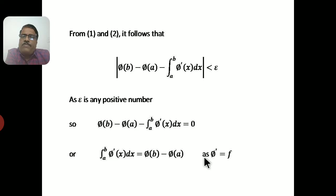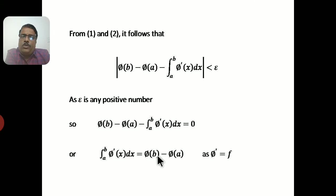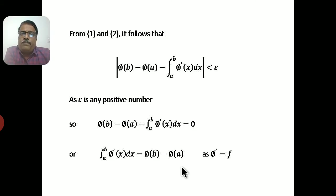Since φ is a primitive, φ′ = f. Replacing φ′ by f gives the integral from A to B of f(x) dx = φ(B) − φ(A). This is the required proof and is known as the Fundamental Theorem of Integral Calculus.